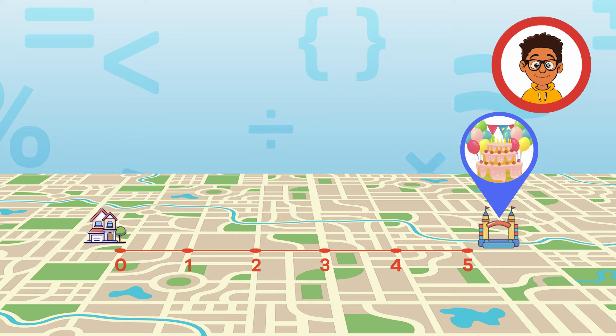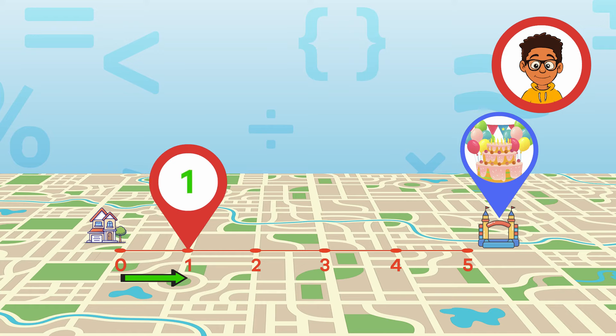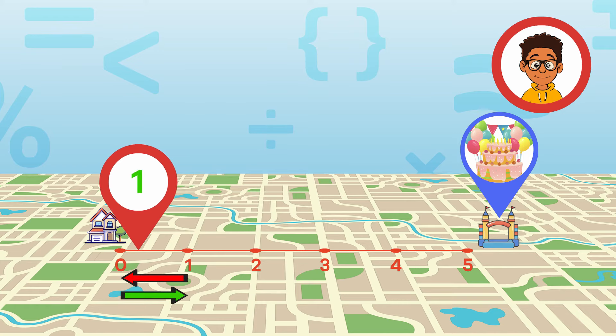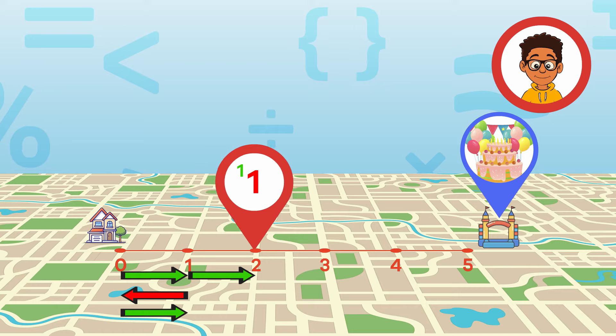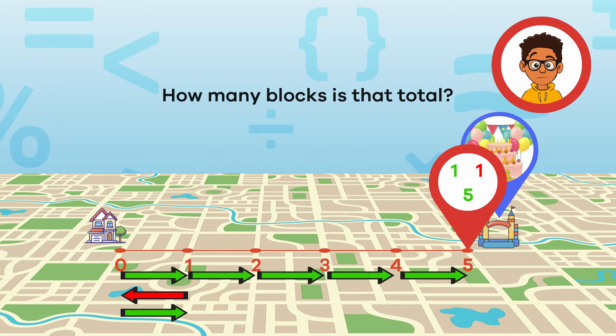Even though the distance between your house and your friend's house is 5 blocks, you definitely walked a longer distance than that to get there. So, how do you find out how far you walked? Well, first, you walked forward 1 block, and then you walked back 1 block, and then you walked the 5 blocks to your friend's house. How many blocks is that total?